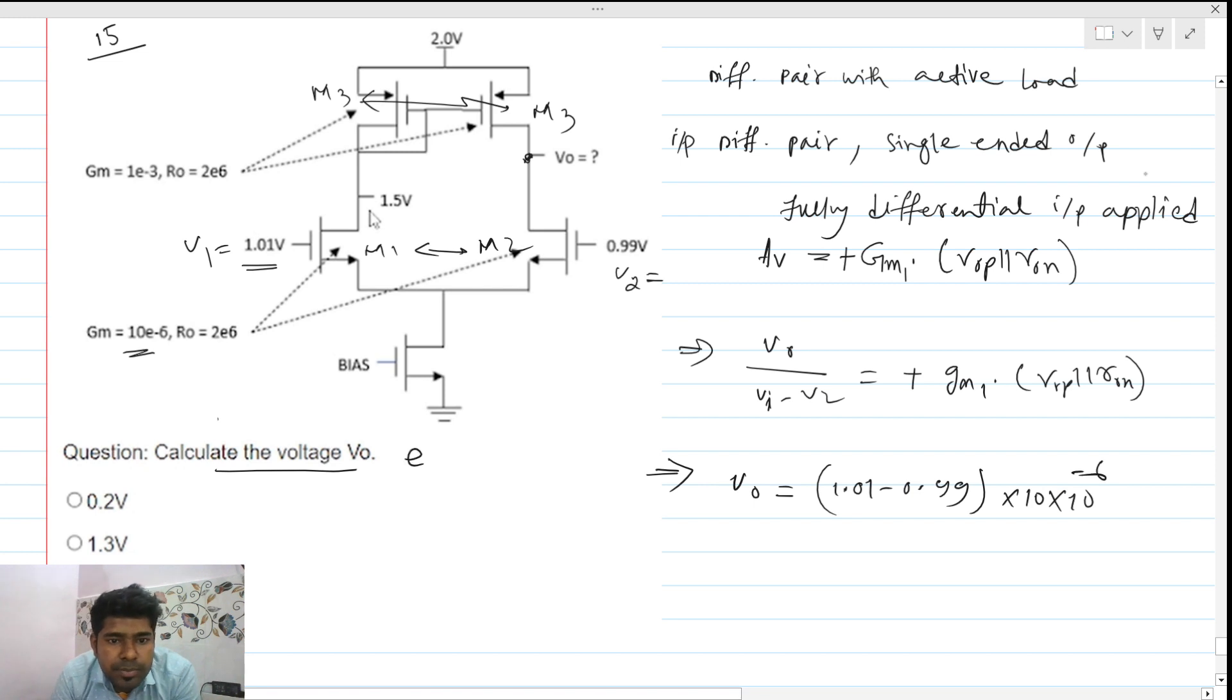E power minus 6 is 10 power minus 6, and e power 6 is 10 power 6. So this is our gm value. And r out, ro p parallel r out here...